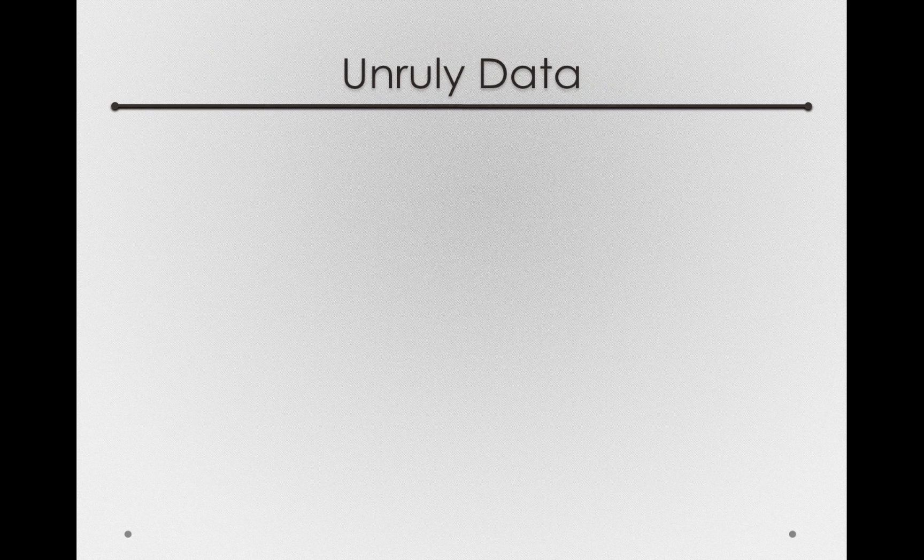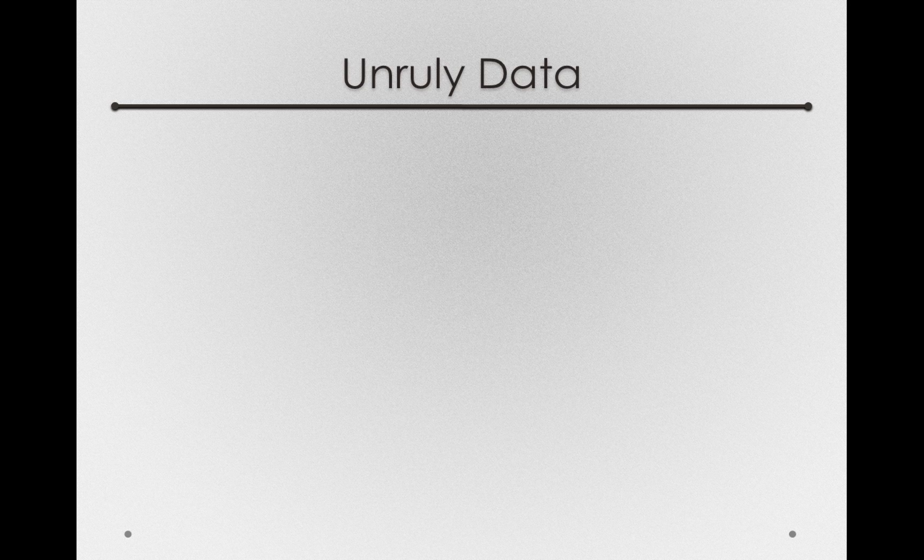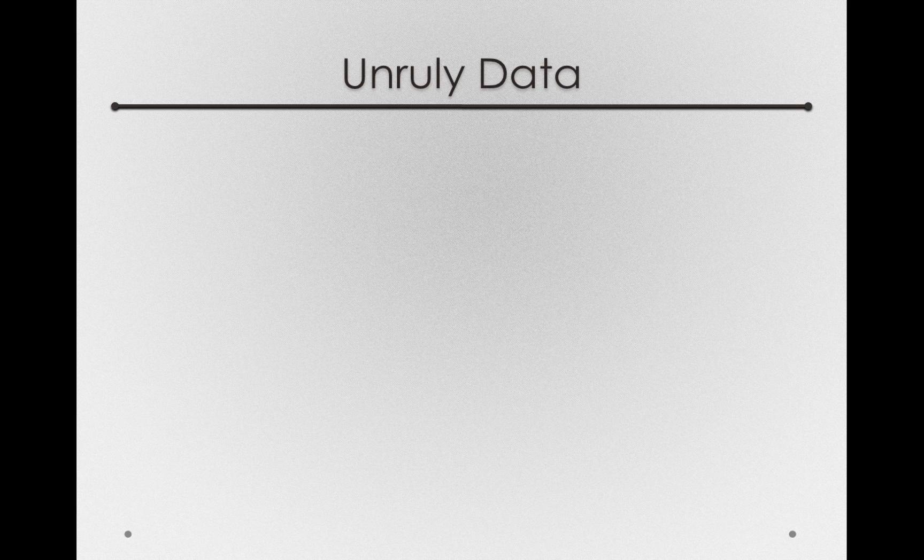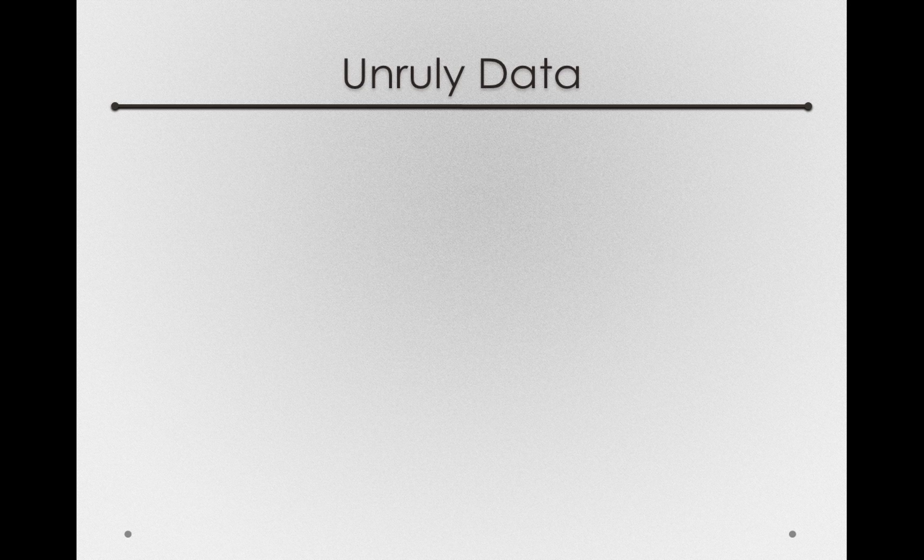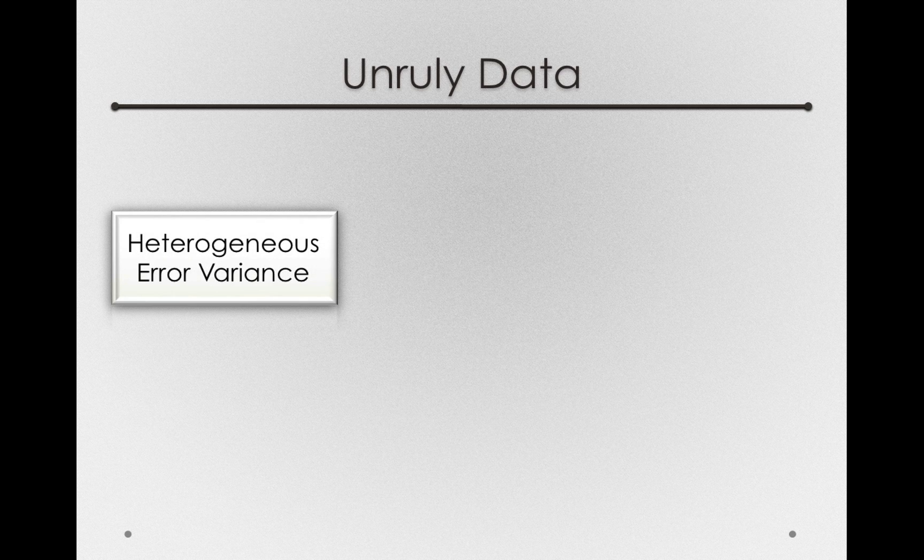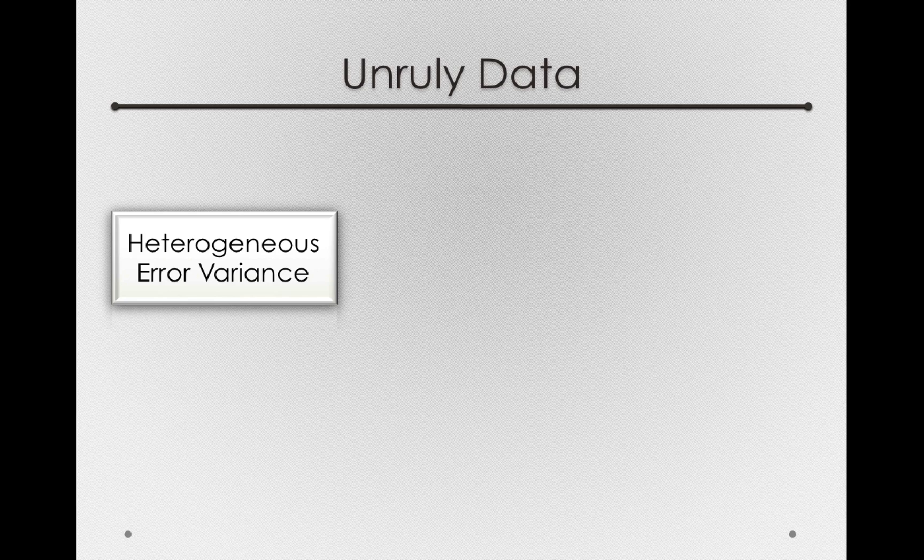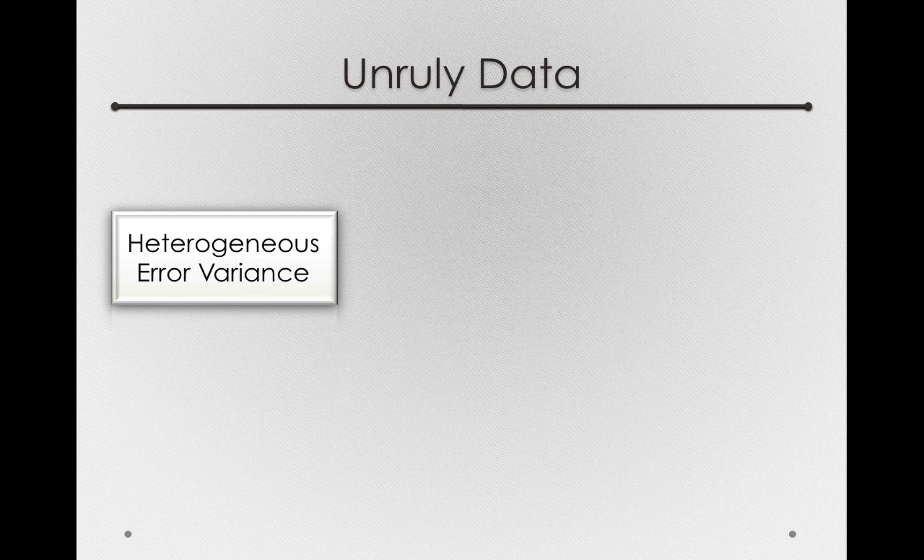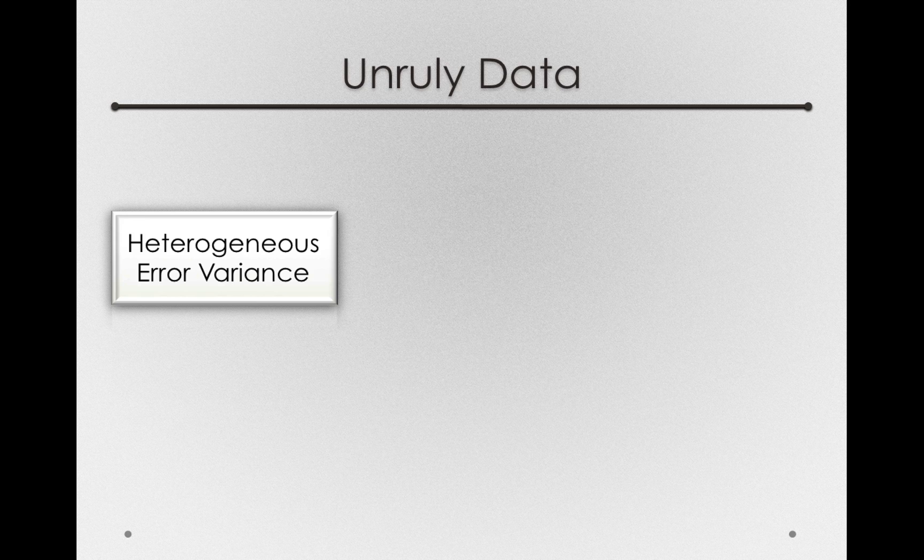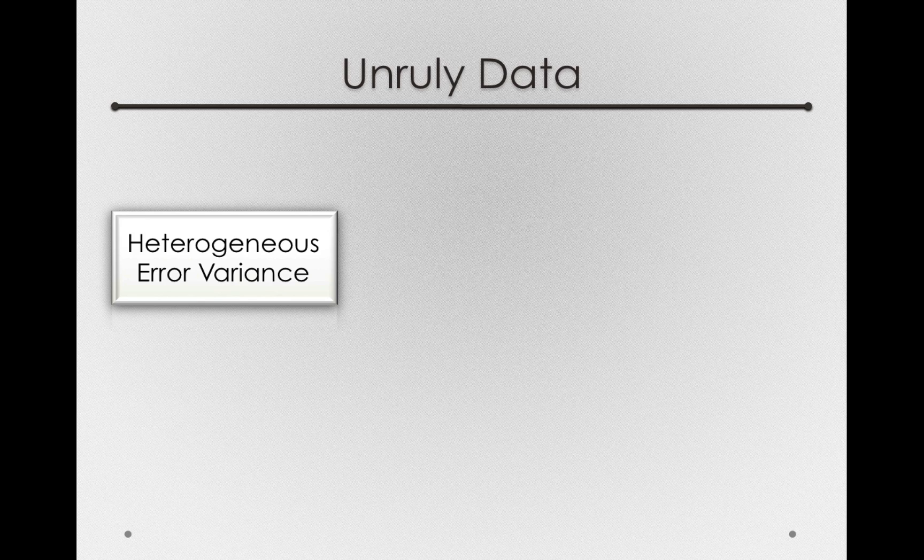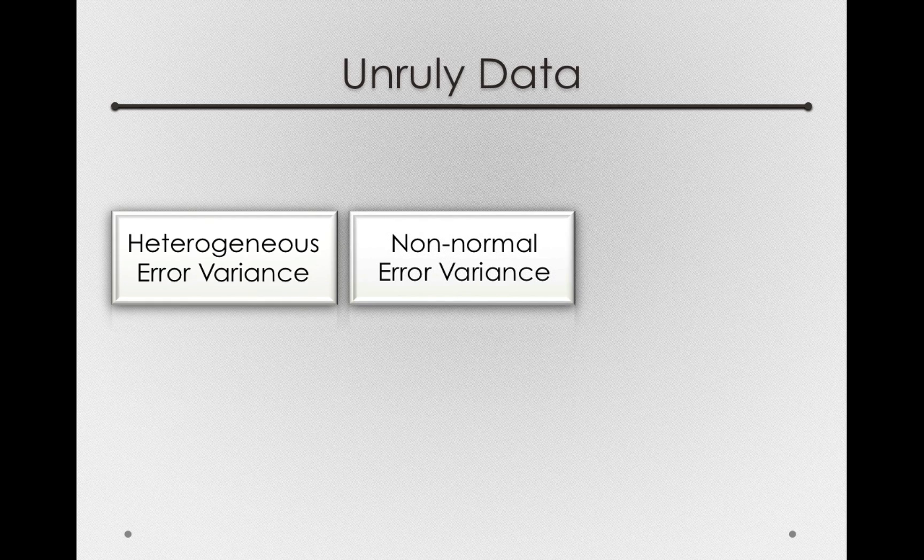So let's talk about different ways that data can be unruly. We've already seen a couple of these, but let's be a little more formal about the consequences and the tests for unruly data. Now the first and probably largest problem will be heterogeneous error variance. That is, in the population, it won't be the case that error is homogeneous or the same in each of the different treatment conditions.